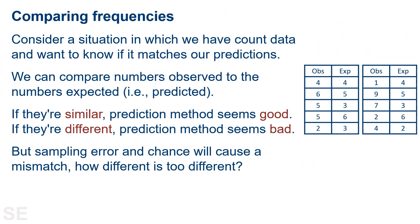Consider a situation in which we have count data and want to know if it matches our predictions. The categories can be whatever we like, as long as we can put each observed value from our sample into a specific category to generate count data. We can compare the numbers observed to the numbers expected — that is, the predicted values. What we're doing is seeing how well our prediction method works for the population based on the sample we have.